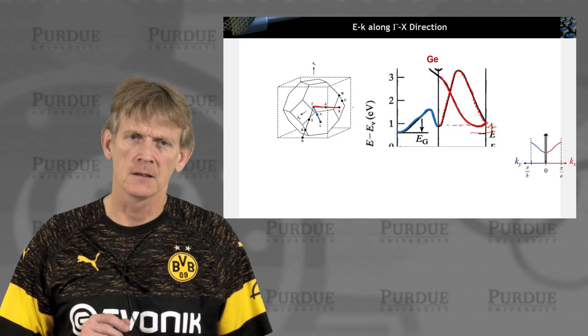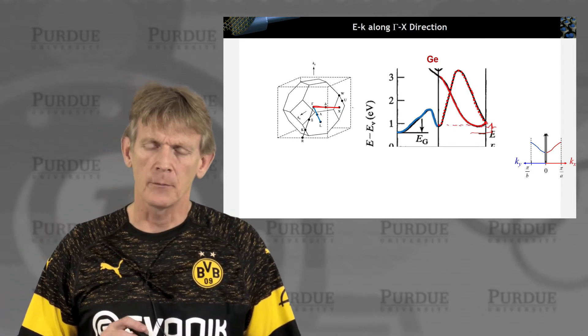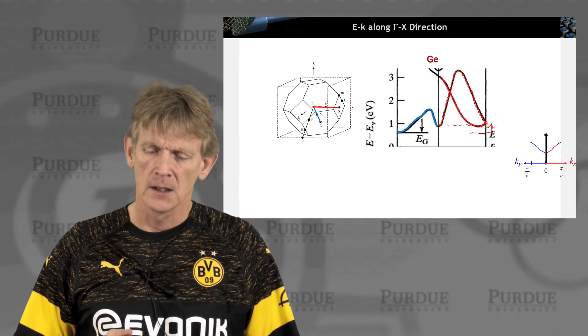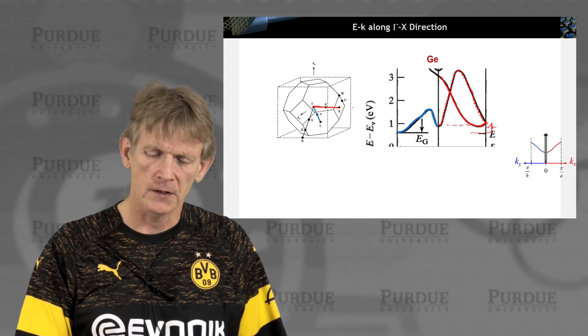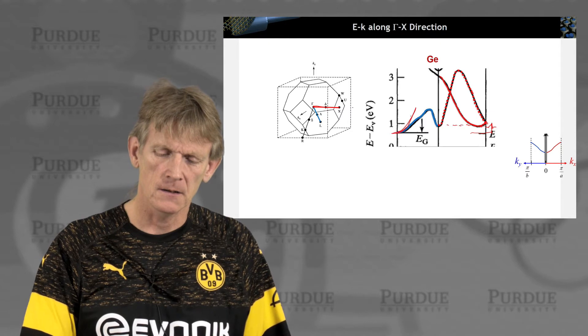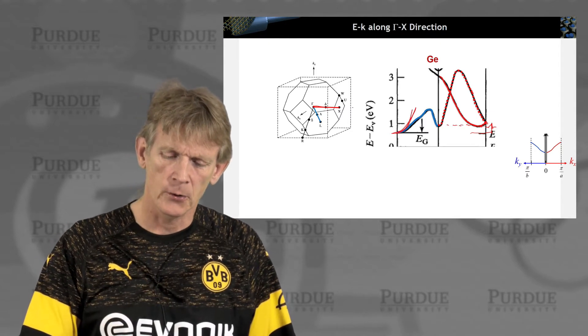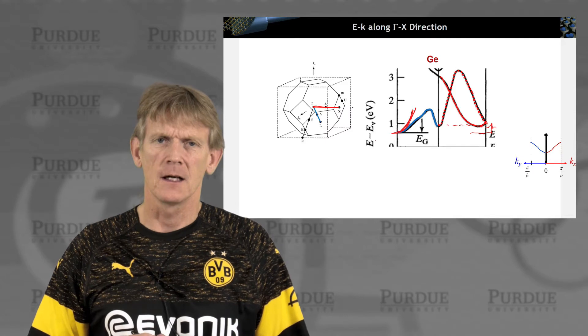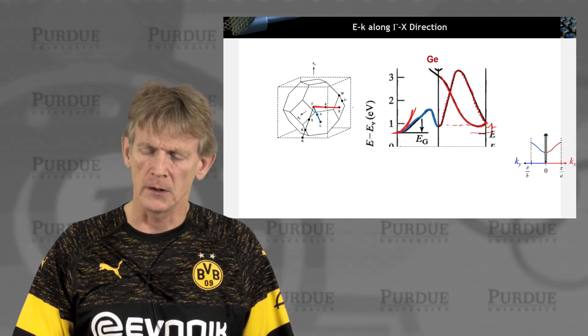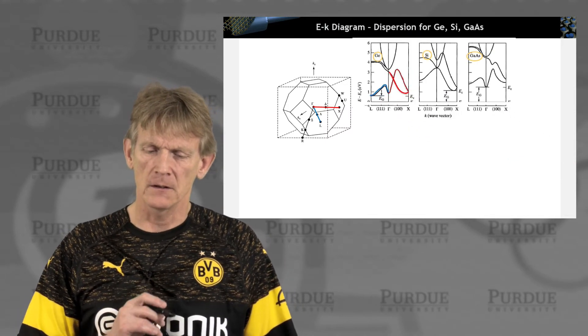All of these energies are above the minimal point at L. So these are states that are above the minimum conduction band edge at the L point in germanium. And so therefore we mostly consider energies here. And I'm drawing this on purpose like a parabola here at the L point.